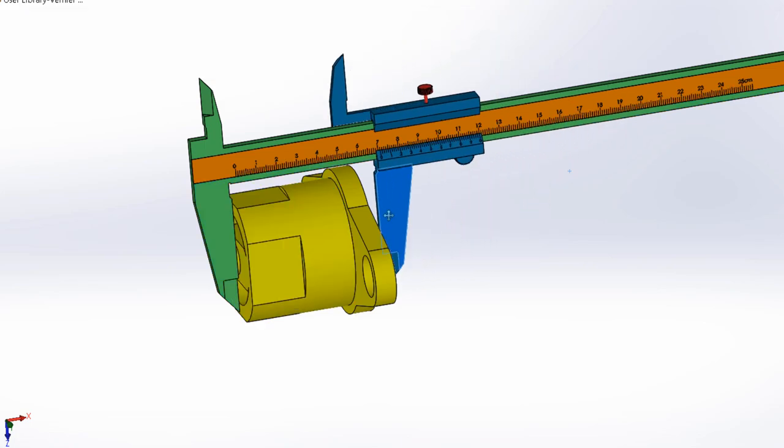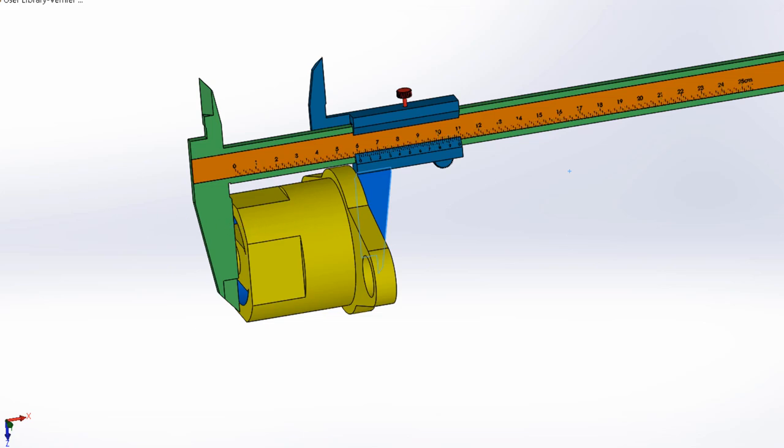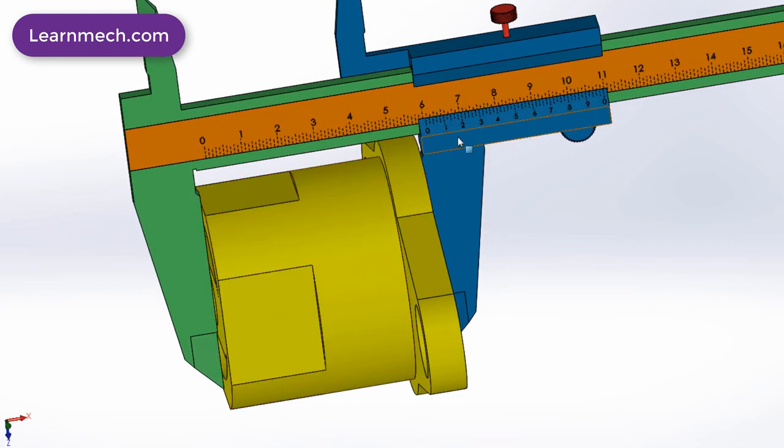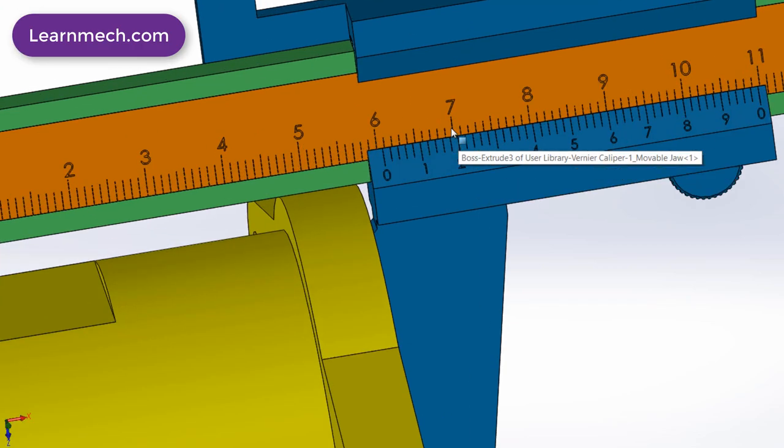Let's see how to use Vernier Caliper. Firstly we need to place the job in between external jaws, close the jaws. By the combination of Vernier scale and main scale we can get the measurement value.